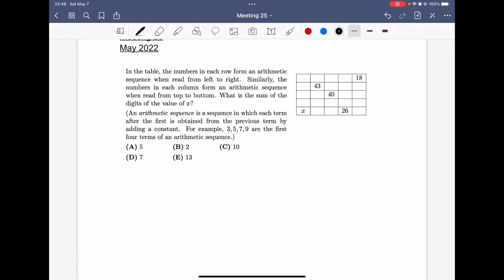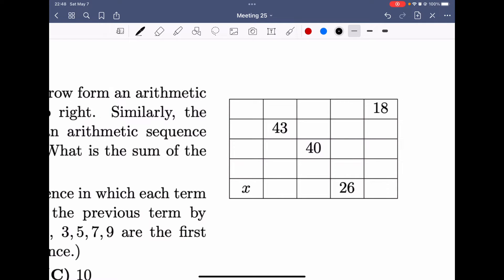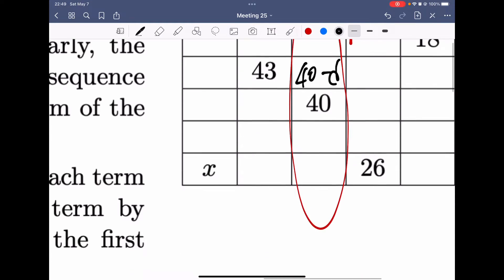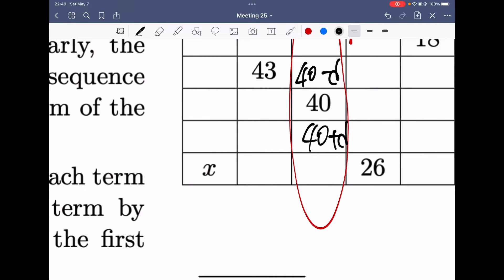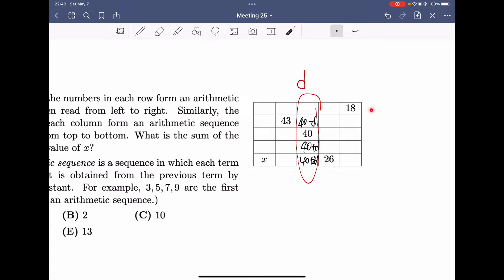In the table, the numbers in each row form an arithmetic sequence, and each column also forms an arithmetic sequence. Okay, so first, we can start the question with the center of the table, which is the number 40. And we can assume the common term in this column is D.